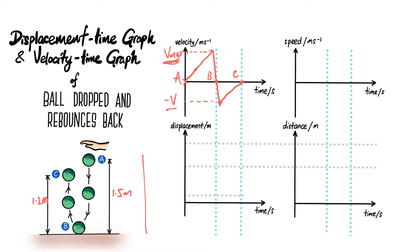As for the displacement-time graph, at time equals zero, the ball is at the reference point, so there's no displacement. And as it goes from A to B, the speed increases, so the gradient...